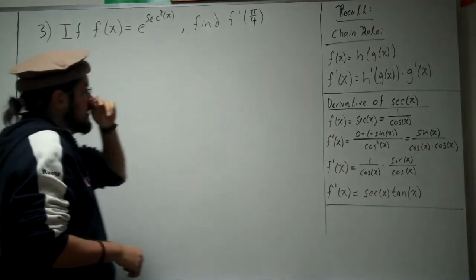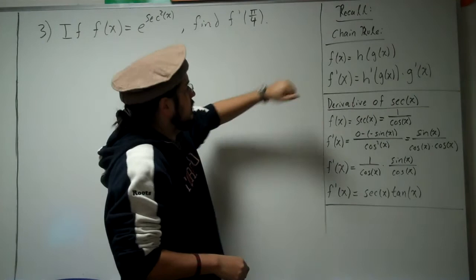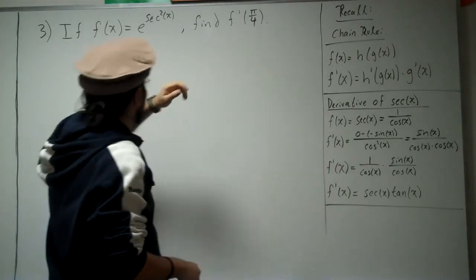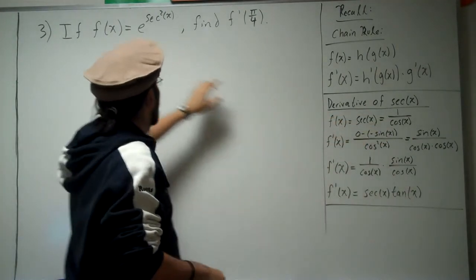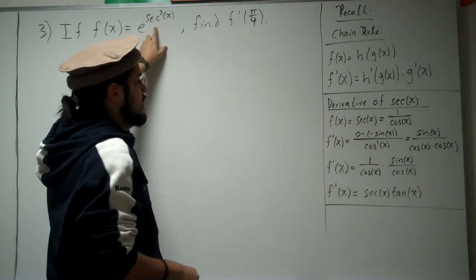Alright, so I've written down some recalls here. We need to recall the chain rule, because we're going to use that for this, and the derivative of secant, because we're definitely going to have to compute the derivative of secant.